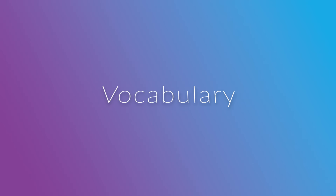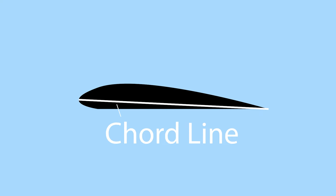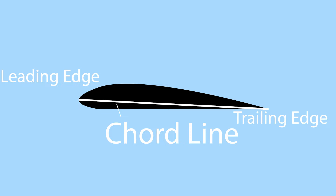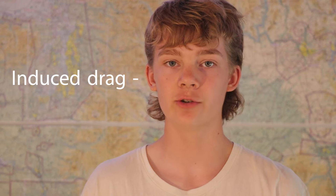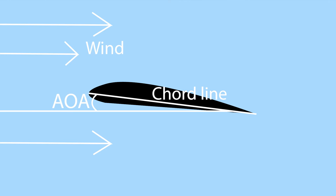Before we get into this video, there are a few vocab terms you should familiarize yourself with. Firstly, the chord line is a straight line drawn from the leading edge of the airfoil to the trailing edge. Secondly, induced drag is any kind of drag produced as a result of lift — induced drag decreases as airspeed increases. Thirdly, angle of attack is the angle between the chord line of the wing and the relative wind. When angle of attack increases, so does lift, at least until you stall.